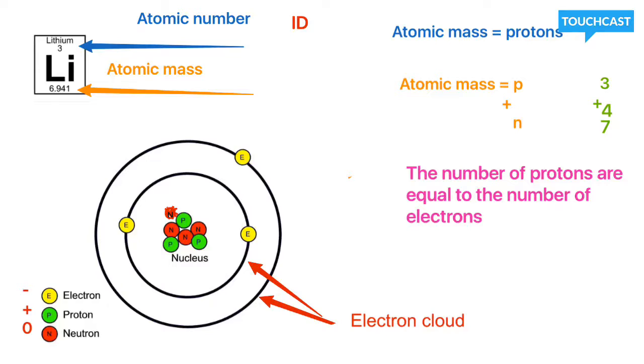Alright, and our electrons are found in the electron cloud. We're going to look at this later on in the lesson. Basically, our electron cloud is made up into different orbitals. These are called energy levels. Let's go ahead and look at that real quick.